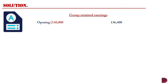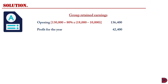Moving to the movement in retained earnings: for the opening, we take $130,000 for the parent, then find the portion of the subsidiary's retained earnings belonging to the parent. The retained earnings at the date of acquisition, which the parent is not entitled to, is $10,000. The cumulative retained earnings to the opening of this financial statement is $18,000. So the post-acquisition reserve is $18,000 less $10,000 giving $8,000; 80% of $8,000 is $6,400, added to $130,000 gives $136,400. Adding the profit for the year of $42,400 gives a carried-forward figure of $178,800.